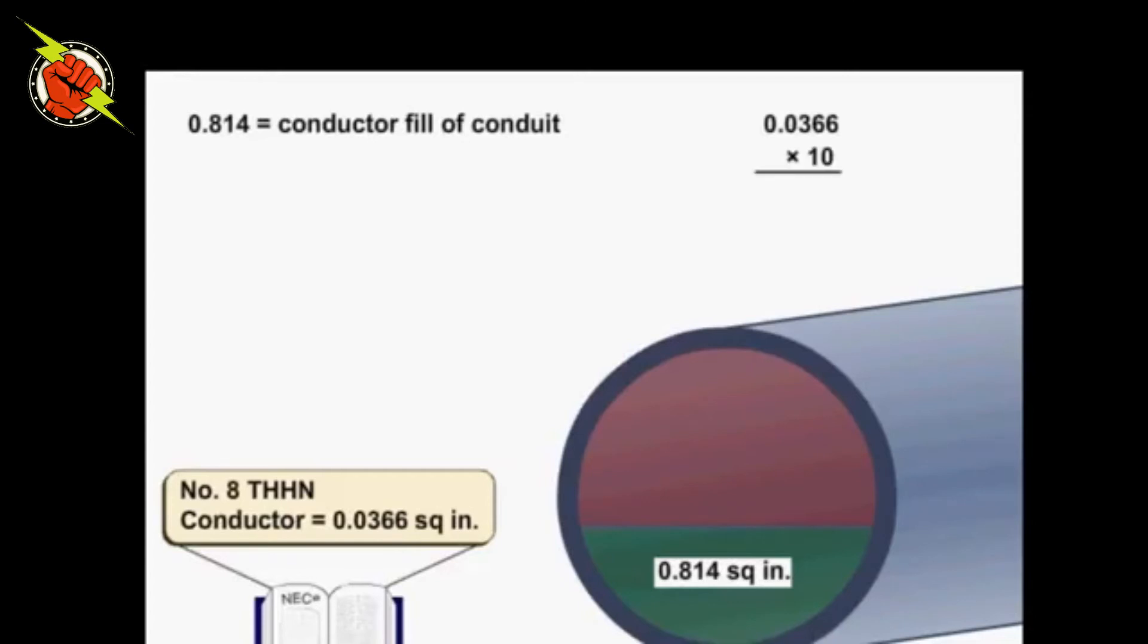If 10 number 8 THHN conductors are in a conduit, then the cross-sectional area of the existing conductors equals 0.366 square inches.